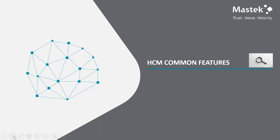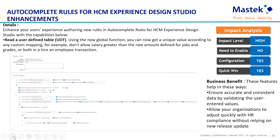Now let's go through the HCM common features. The first is autocomplete rules enhancements for HCM Experience Design Studio. The user experience is enhanced using new roles in autocomplete rules with the following capabilities. First, read a user-defined table (UDT): using the new global function, you can get a unique value according to any custom mapping — for example, to not allow salary greater than the rate amount defined for jobs and grades in a hire employee transaction. The business benefit is that these features ensure accurate and consistent data by validating user-entered values, and allow the organization to adjust quickly with HR compliance without relying on a new release update.